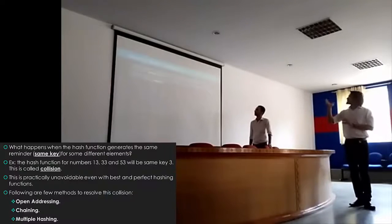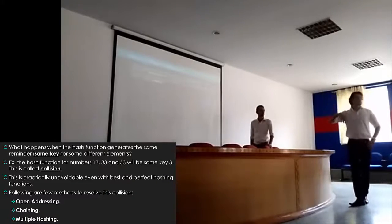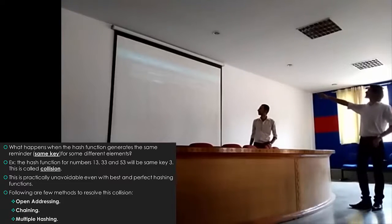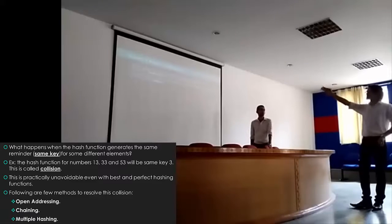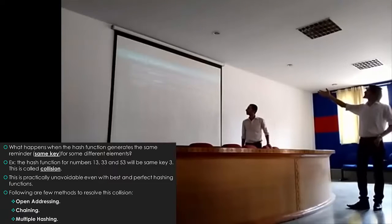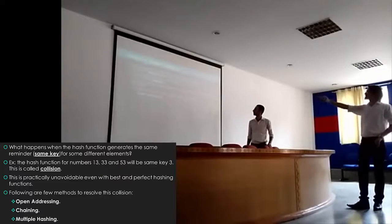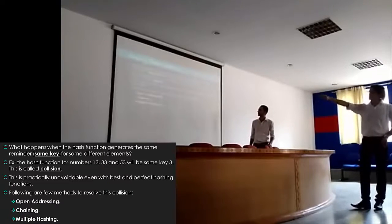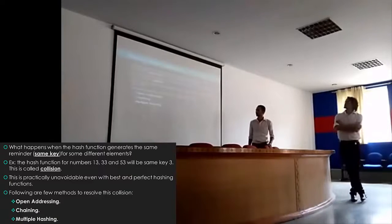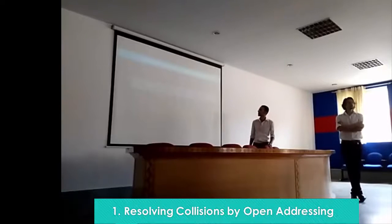To handle collision, we have three methods. The first one is open addressing, the second is chaining, and the third is multiple hashing. In open addressing, we have a number of locations in an array.